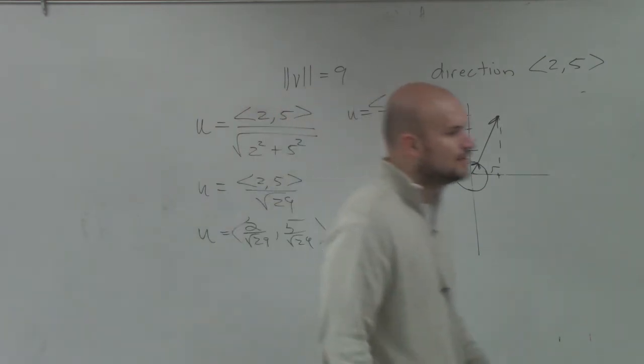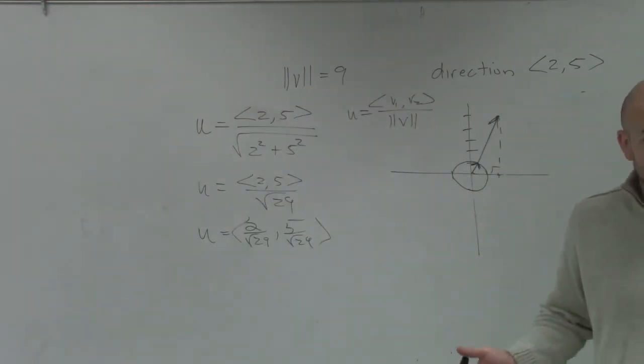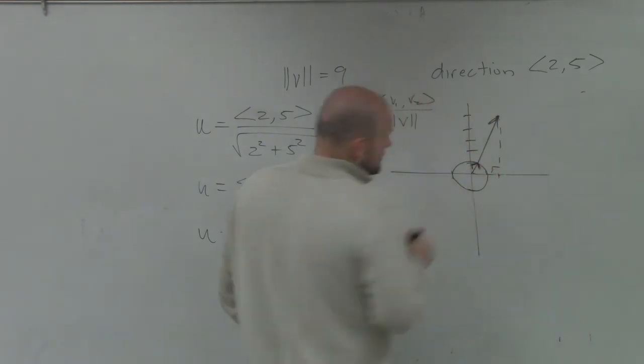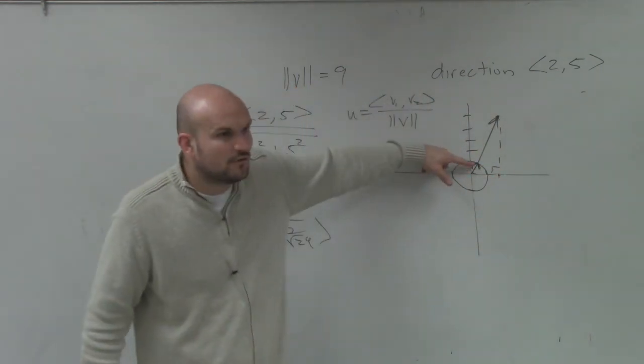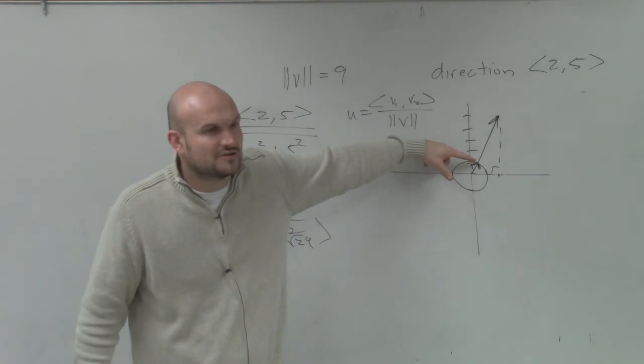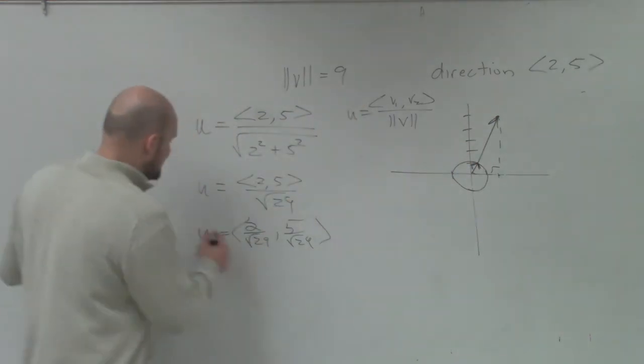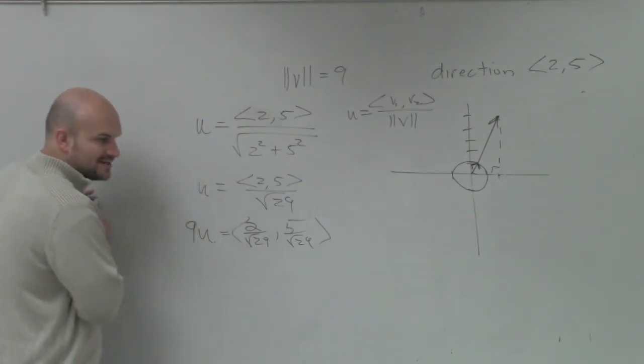But ladies and gentlemen, they want us to find a vector that has a magnitude of 9. Well, that unit vector has a magnitude of 1, right? So if that has a magnitude of 1, how many unit vectors do I need to have a magnitude of 9? Nine of them. Wow. So I need to figure out what 9u is.